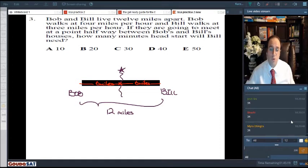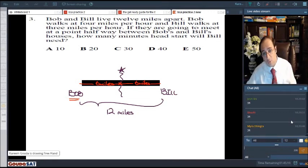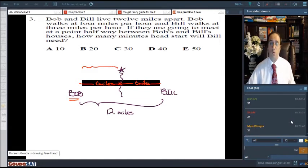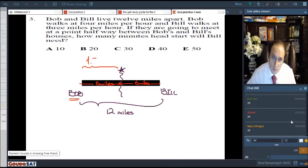And then, we know their speeds. Bob walks at 4 miles per hour. So, you ask yourself, if Bob walks at 4 miles per hour, so every hour he walks 4 miles. How much time will it take him to reach here? So, an hour, 4 miles. And then, half an hour for another 2 miles, that's 6. So, he takes 1 and a half hours, 1.5 hours.